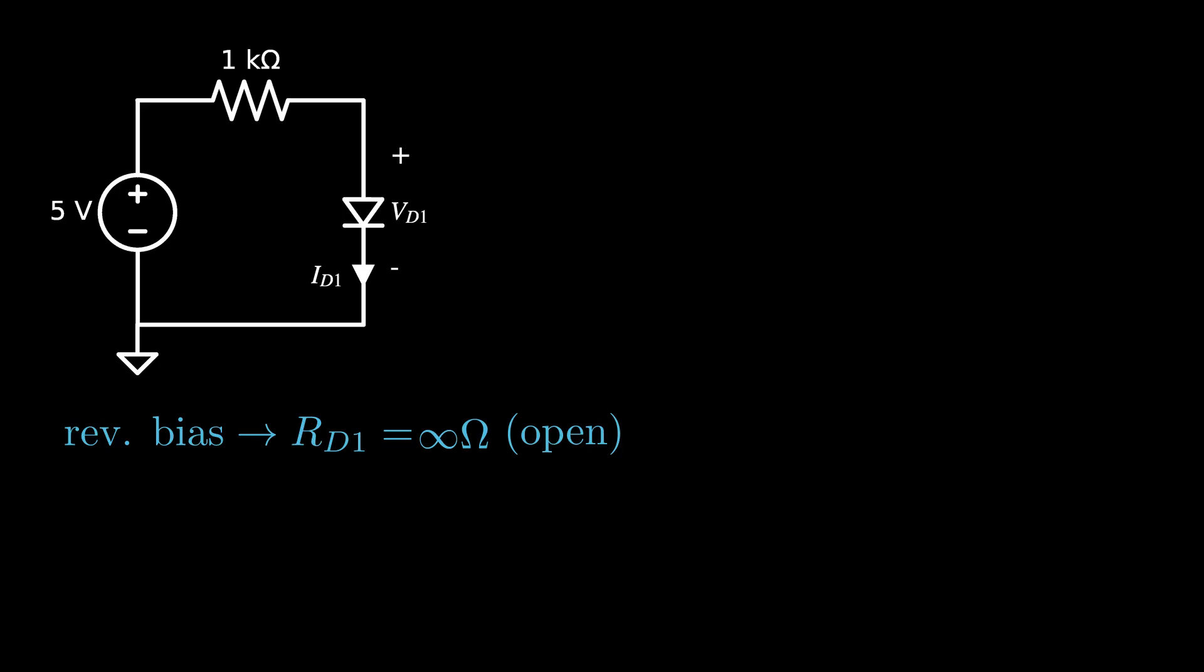Let's consider the other extreme, when there is infinite current. Calculating the resistance of the diode in this case, we find the resistance is zero Ohms, what we sometimes call a short.